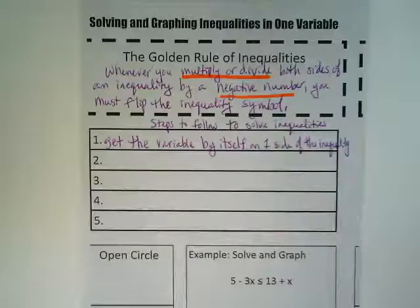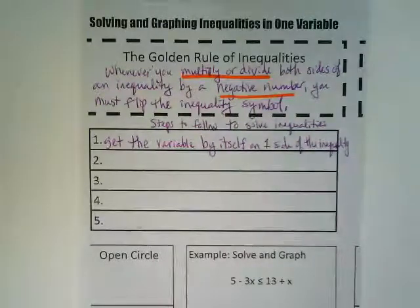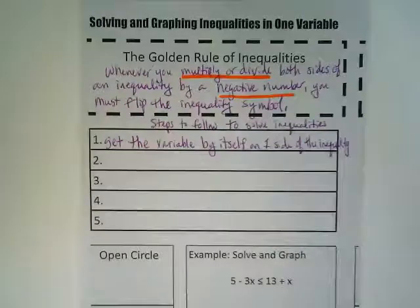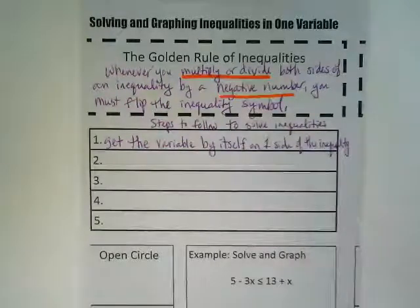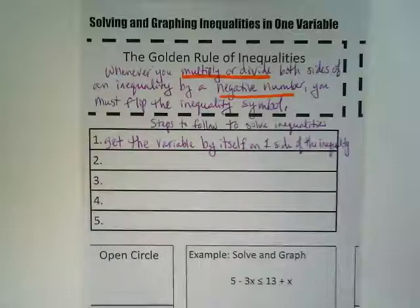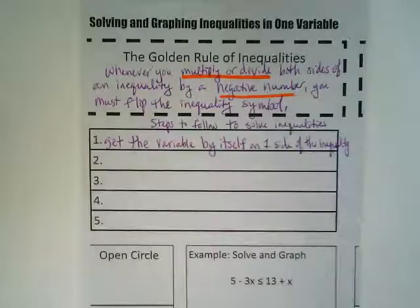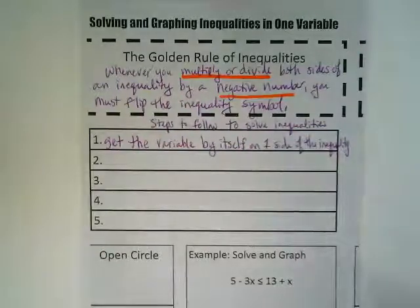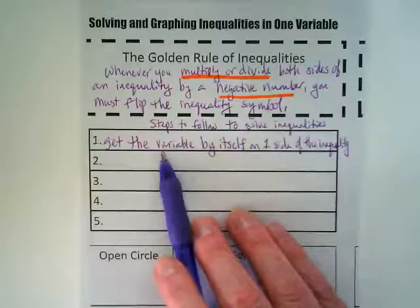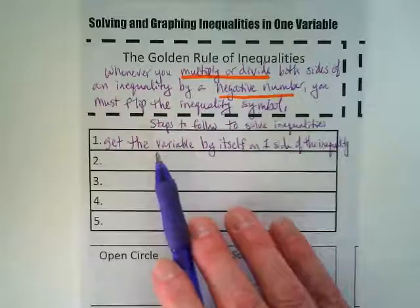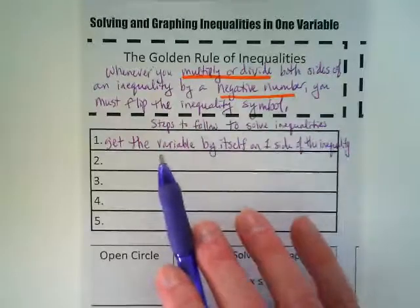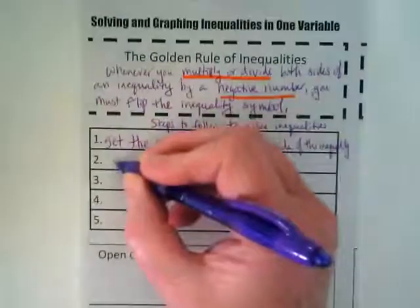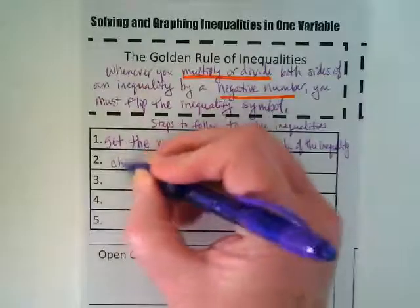That's kind of a deceptive step one because there's a lot of things you might have to do before you can do that. You might have to distribute, you might have to simplify and combine like terms, and then start to move things to both sides of the inequality just like we were practicing with equations. But our goal before we can start solving the inequality is to simplify it and get the variable to one side.